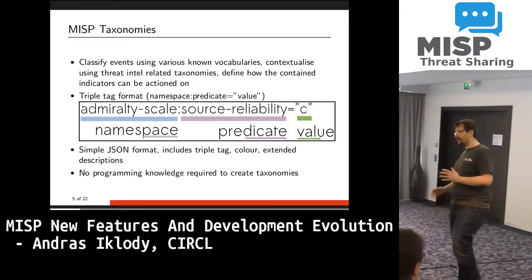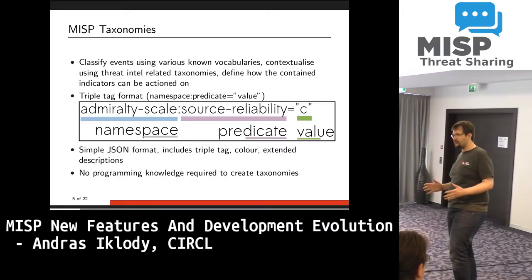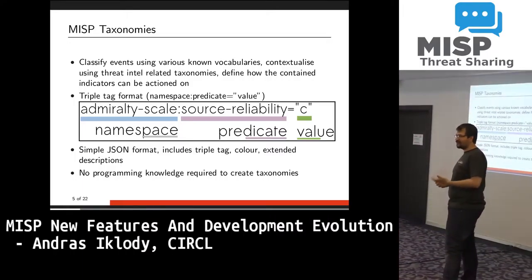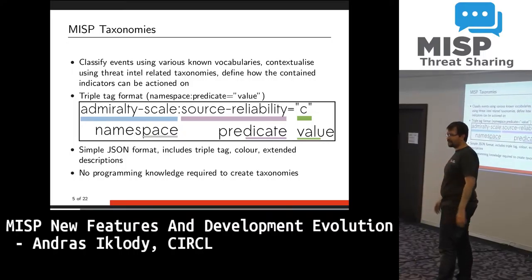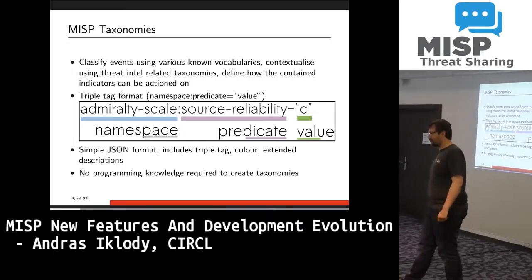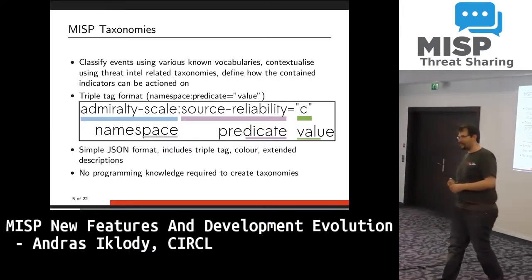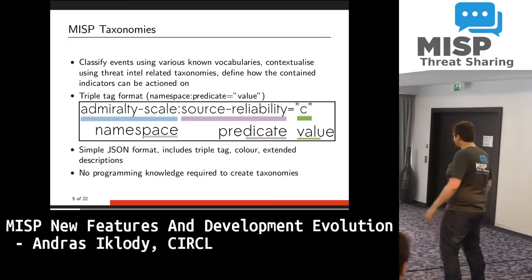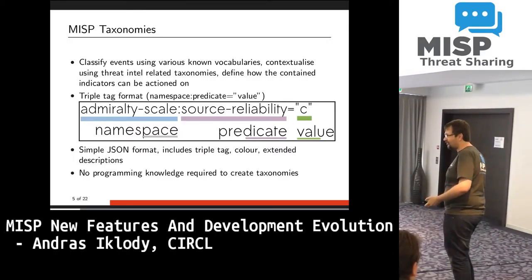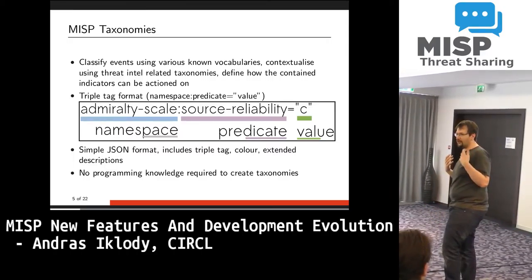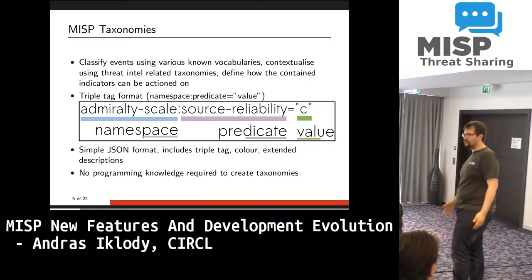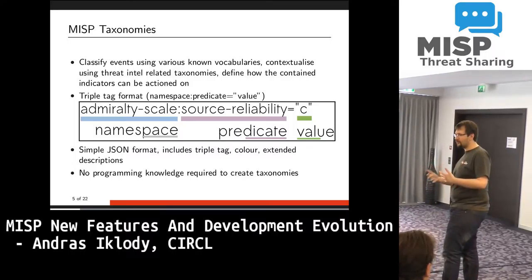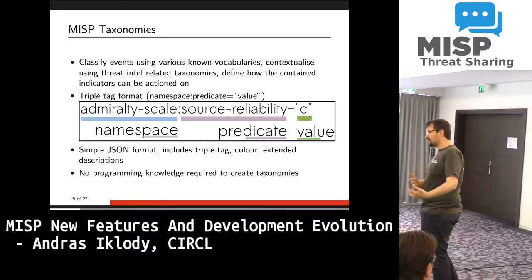To create such a vocabulary, all you have to do is create a simple JSON that follows a format. The idea was that anyone not familiar with programming can sit down and create it. Rafael will talk about an even easier way of doing it today, so you don't even have to create JSON anymore. The idea is that you should have no background knowledge in programming to be able to contribute to the taxonomies, because very often it's not the same people doing the taxonomies as those doing the programming.